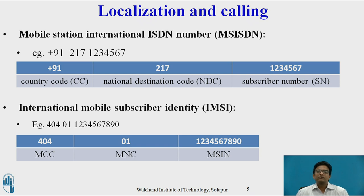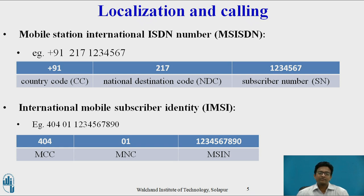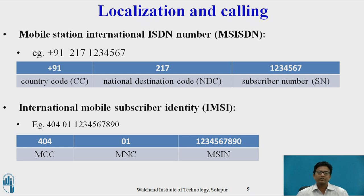Mobile Station International Subscriber Directory Number (MSISDN) is a number used to identify a mobile number internationally. Based on the SIM, a mobile station can have many MSISDNs, as each subscriber is assigned a separate MSISDN to their SIM. As an example, you can see in the table: +91 is the country code, 217 is the national destination code, and 1234567 is the subscriber number.